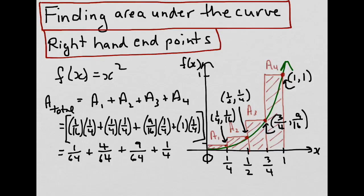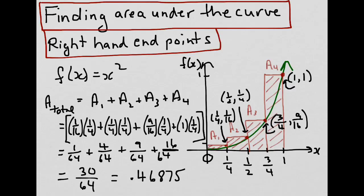Similarly, for the one quarter, we'd multiply by 16 to get sixty-fourths, giving us 16 sixty-fourths. Continuing to solve: 1 plus 4 is 5, plus 9 is 14, plus 16 is 30 sixty-fourths, which in decimal form equals 0.46875. We could add in whatever units squared we're using.